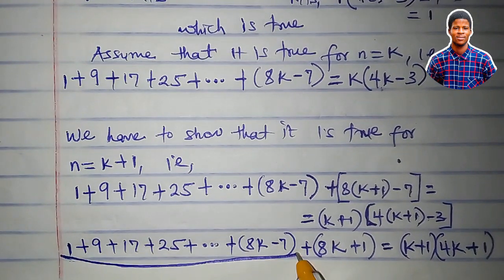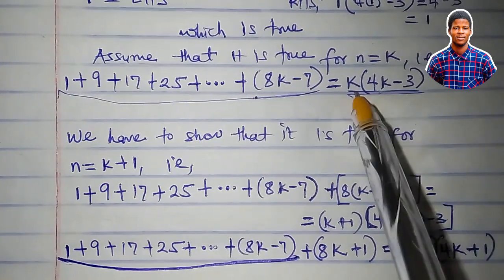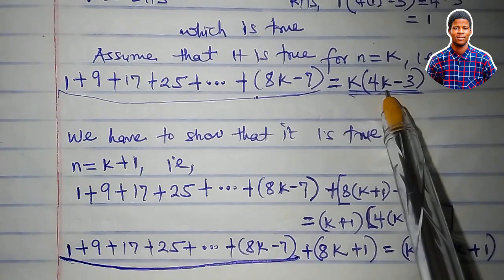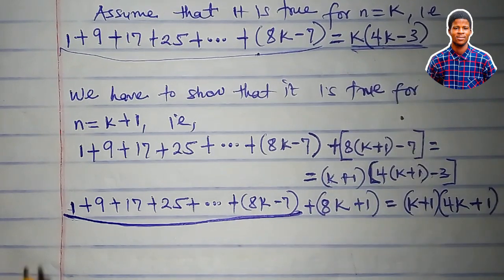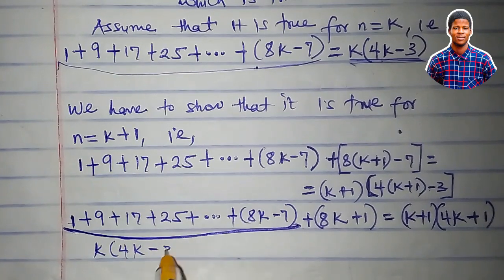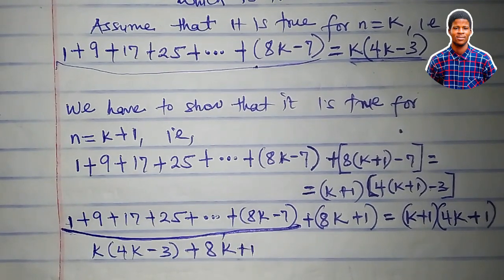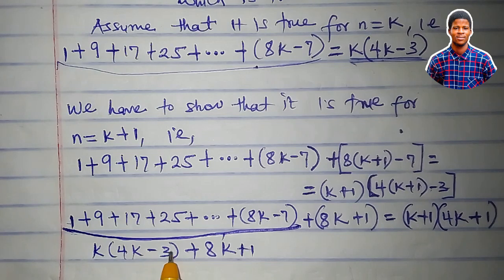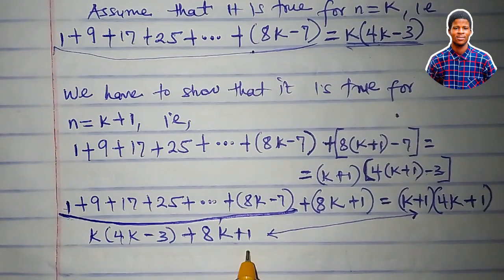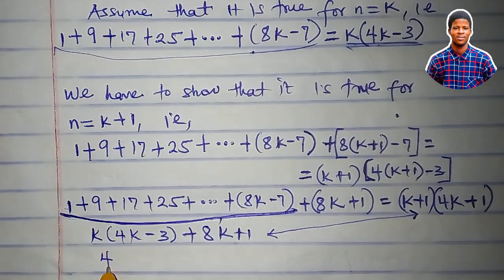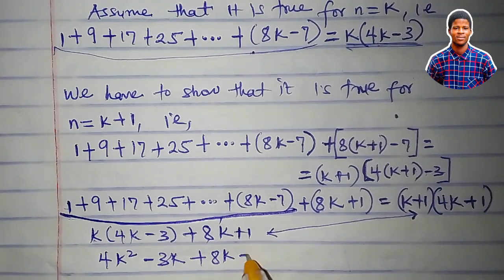This sum from 1 to 8k minus 7 is what we have at this point, and this is equal to k times 4k minus 3. That means in place of the sum, I can write k times 4k minus 3, plus 8k plus 1. I want to simplify this expression to look exactly like what we have for n equal to k plus 1. So let's simplify: k times 4k is 4k squared, k times minus 3 is minus 3k, then plus 8k plus 1.